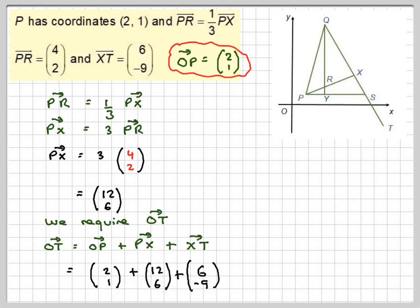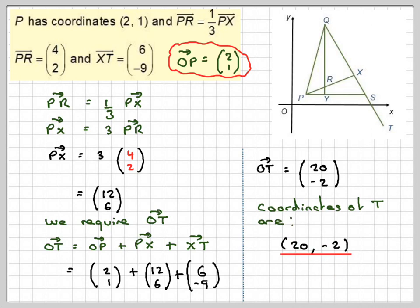2 plus 12 plus 6 will make 20, and then 1 plus 6 minus 9, that's 7 minus 9, which will make minus 2. So the coordinates of T are 20, minus 2.